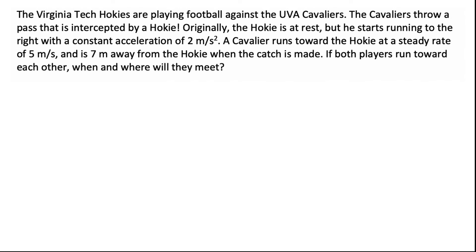We're going to tackle a 1D kinematics problem — and yes, that's a terrible pun because this is a football problem. The Virginia Tech Hokies are playing football against UVA Cavaliers. The Cavaliers throw a pass, which is intercepted by one of our Hokies. Initially, that Hokie is at rest, but as soon as he catches the ball, he runs to the right with a constant acceleration of 2 meters per second squared. At the same time, a Cavalier is running toward the Hokie at a steady rate of 5 meters per second, and at the moment when the Hokie catches the ball, these two players are 7 meters apart. So the question is: if both players run toward each other, when and where will they meet?